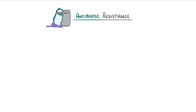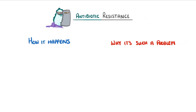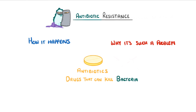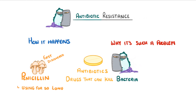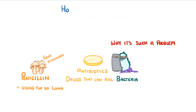You've probably heard of antibiotic resistance. In this video we're going to explore how it happens and why it's such a problem. Antibiotics are a group of drugs that can kill bacteria — the most well-known example is penicillin, which was the first one to be discovered almost a hundred years ago. At first it was able to kill loads of different types of bacteria, but because we've been using it for so long, some types of bacteria have now become resistant to it.